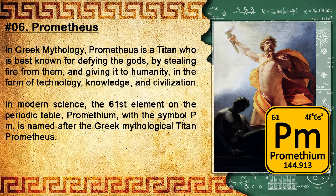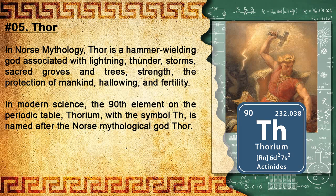Number 6: Prometheus. In Greek mythology, Prometheus is a Titan best known for defying the gods by stealing fire from them and giving it to humanity in the form of technology, knowledge, and civilization. In modern science, the 61st element on the periodic table, promethium, with the symbol Pm, is named after the Greek mythological Titan Prometheus.